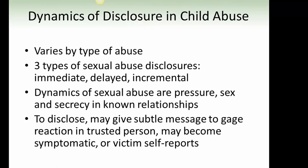Dynamics of disclosure in child abuse vary by type of abuse. There are three types of sexual abuse disclosures: immediate, delayed, and incremental. The dynamics of sexual abuse involve pressure, secrecy, and known relationships. To disclose, a child may give subtle messages to gauge reaction and trust in a person, or may become symptomatic, or the victim may self-report.